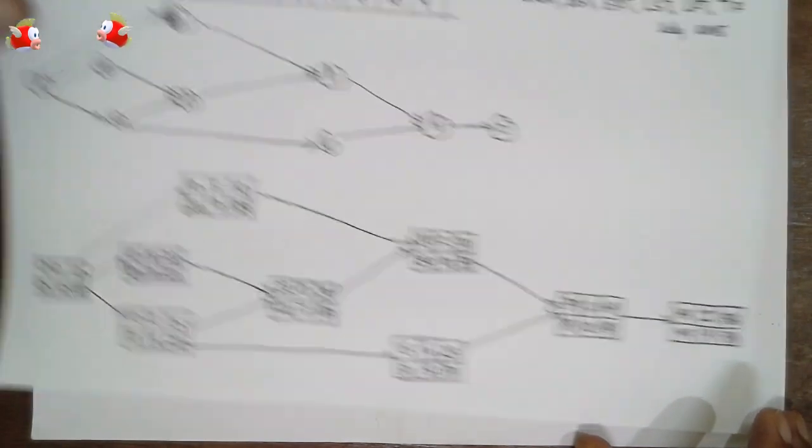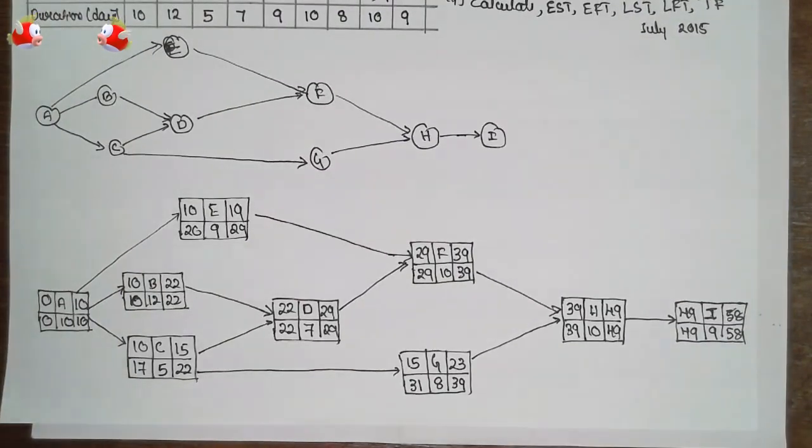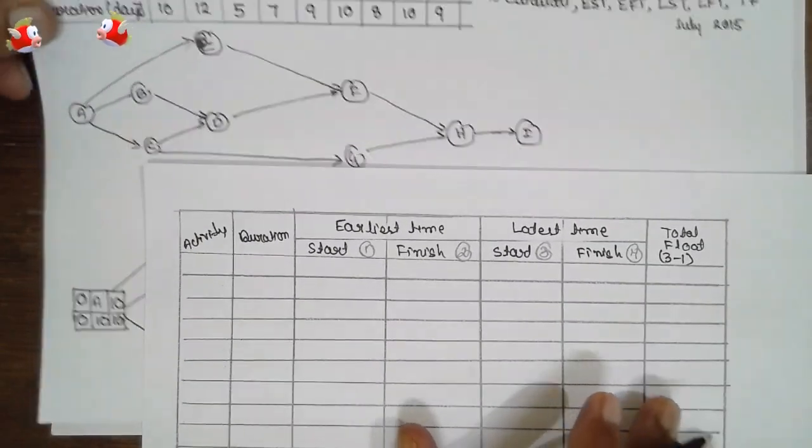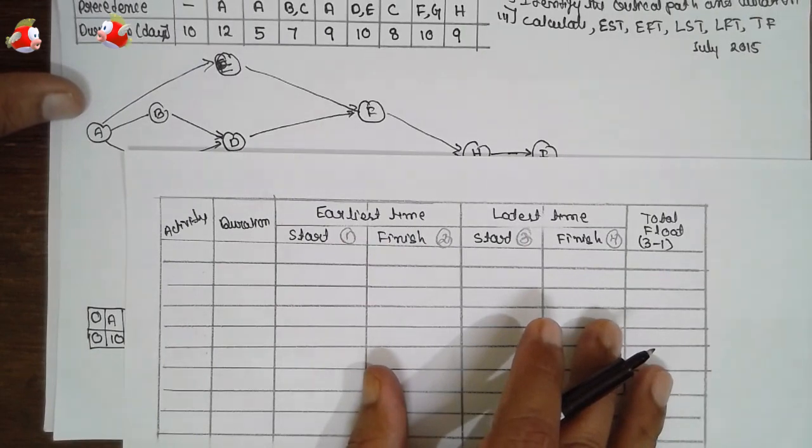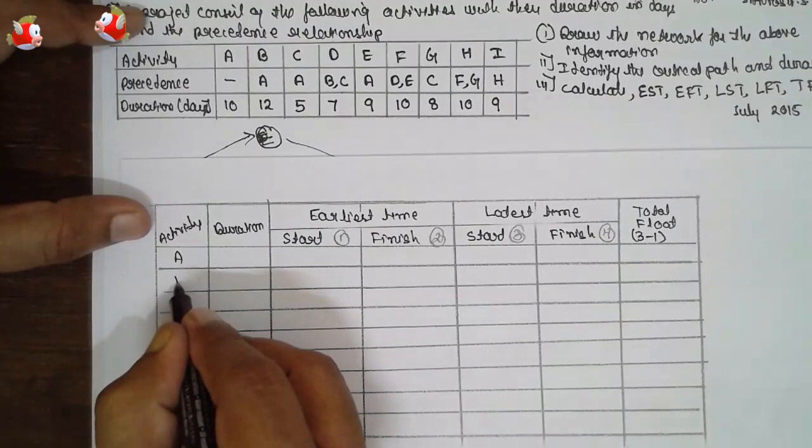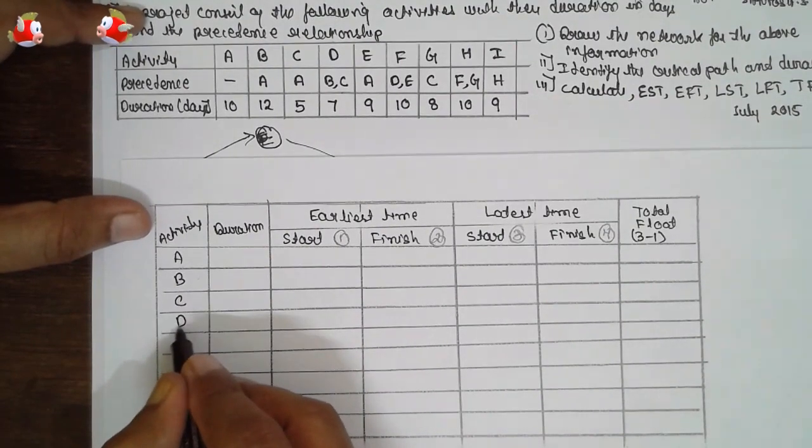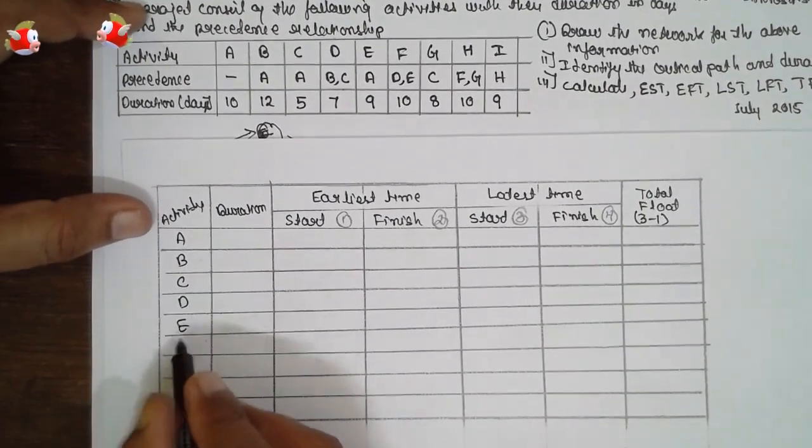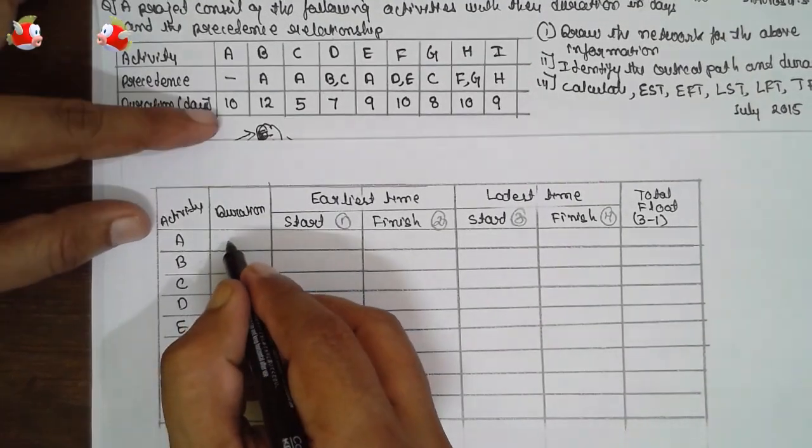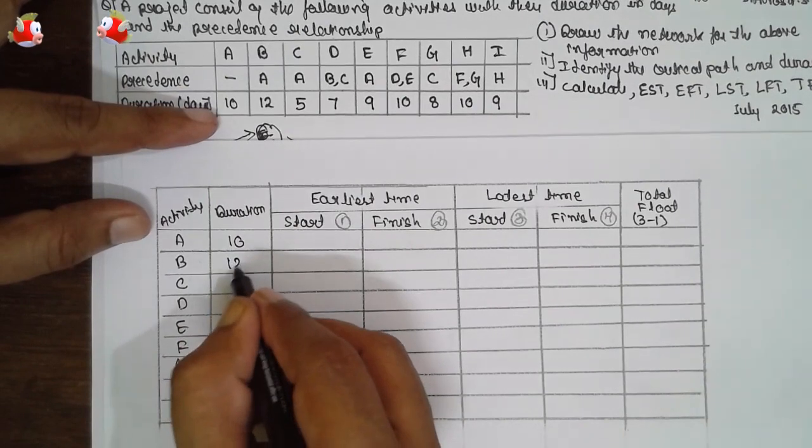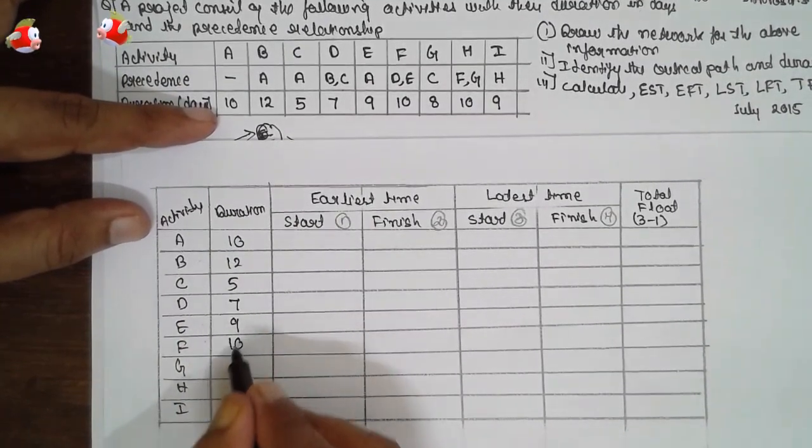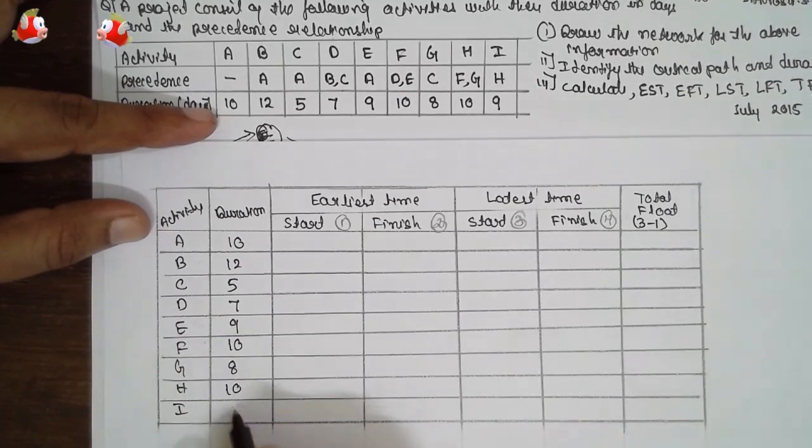After completing here, in this chart, you have to write the activity: A, B, C, D, E, F, G, H, and I. Duration 10, 12, 5, 7, 9, 10, 8, 10, and 9.